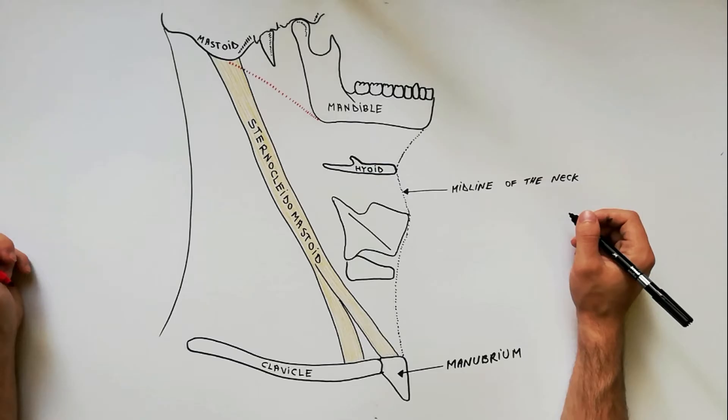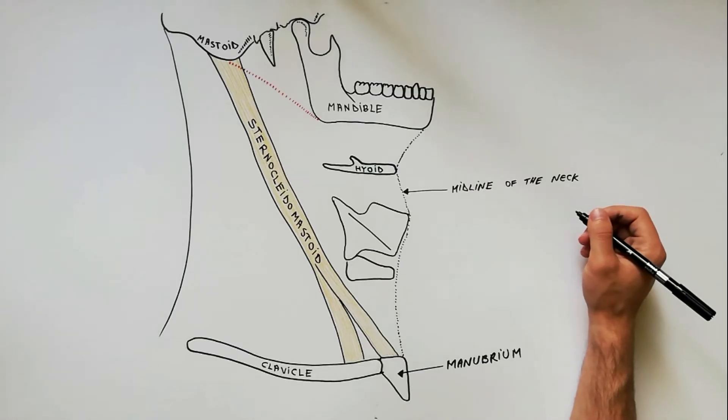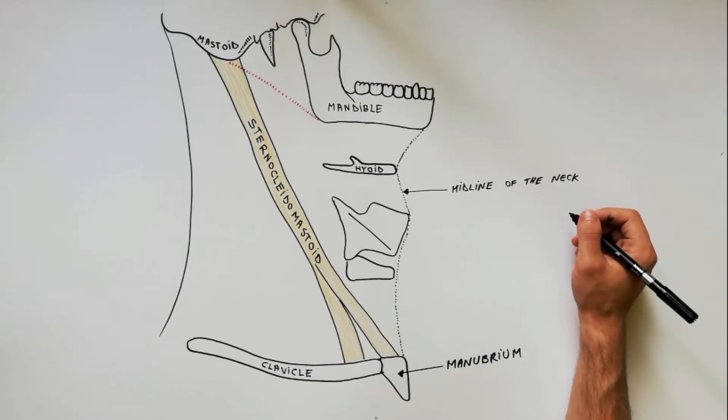The anterior triangle of the neck is subdivided into four smaller triangles by two muscles, the digastricus and the superior belly of the omohyoid.